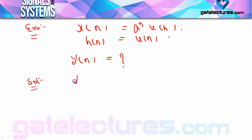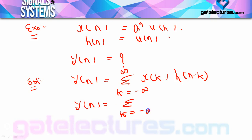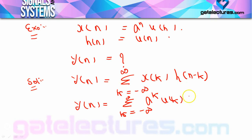अगर मैं formula लिखूँ तो Y(n) = summation of k = -∞ to +∞ of X(k) * H(n-k)। इस formula में X(k) और H(n-k) की value put करें तो X(k) = A^k * U(k) और H(n-k) = U(n-k) हो जाएगा। यह हमारा Y(n) का equation आ गया।